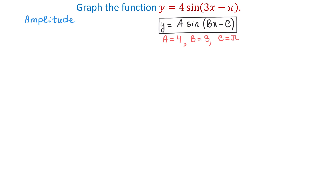The amplitude is found using the formula absolute value of a, and in this case the absolute value of 4 is 4. This tells us that the maximum value of this function will be 4, and the minimum value will be negative 4.